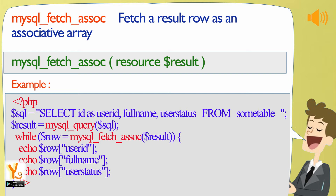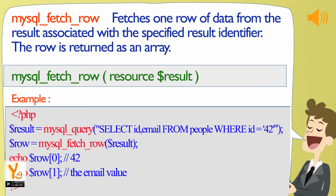mysql_fetch_assoc fetches a result row as an associative array. mysql_fetch_row fetches one row of data from the result associated with the specified result identifier, and the row is returned as an array.